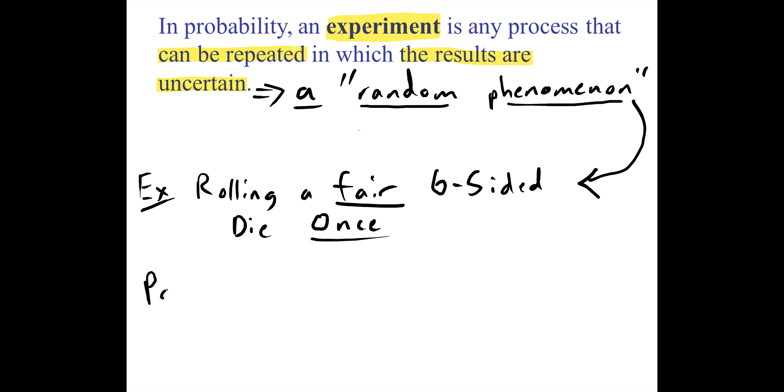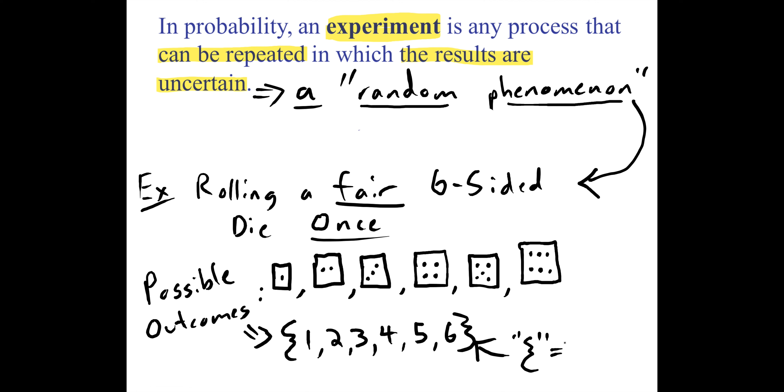If we do that, we can be very clear about what are the possible outcomes and we're gonna get all the different numbers. Sometimes we could group those with a little curly brace. When I use that curly brace I'm saying that I have a group of things, and in math another word for a group of things is a set.